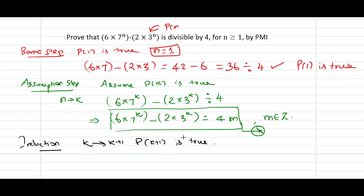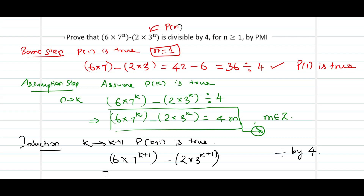Now let me replace k with k plus 1. We have 6 into 7 power k plus 1 minus 2 into 3 power k plus 1. This is the quantity I need to show is divisible by 4. Let me split and write this as 6 into 7 power k times 7, minus 2 into 3 power k times 3. From the assumption, I replace 6 into 7 power k with 4m plus 2 into 3 power k.